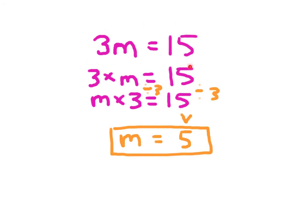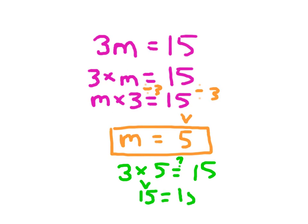Again, 3M equals 15 means 3 times M. Does 3 times 5 equal 15? That's our check work. 15 does equal 15, so it is an appropriate and valid solution — M does equal 5.